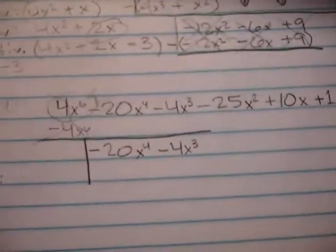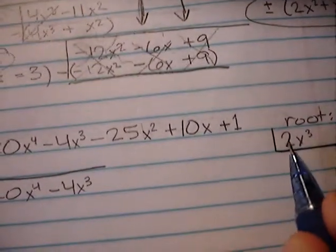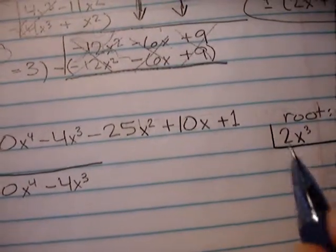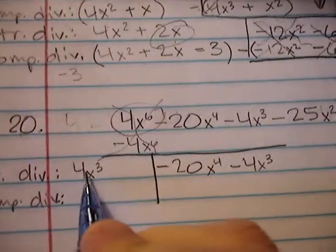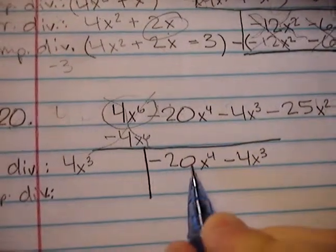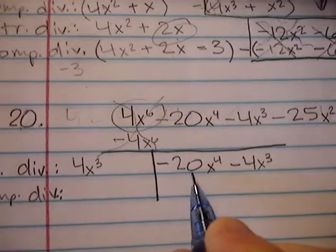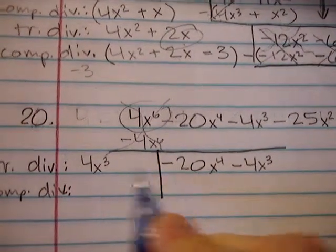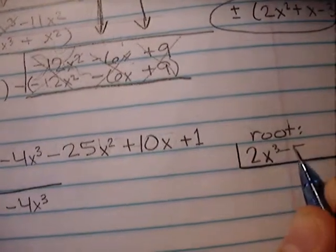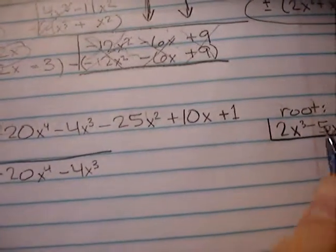Okay, our trial divisor is going to be twice our latest root. So 4x cubed. 4x cubed. And we're going to take our trial divisor and divide it into our first remainder. So negative 20 divided by 4 is negative 5. Negative 5x. That's what that'll be. Negative 5x. So we've got that term.